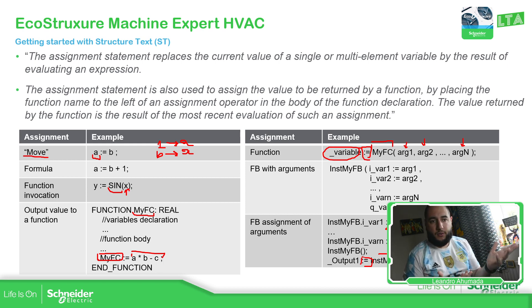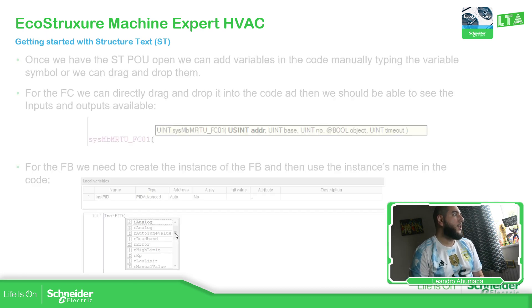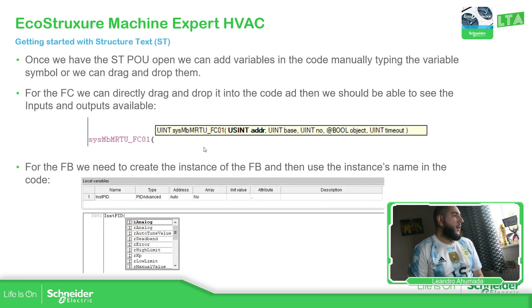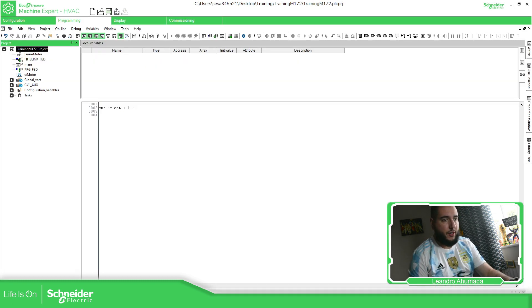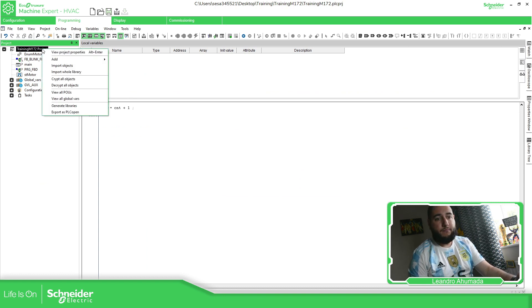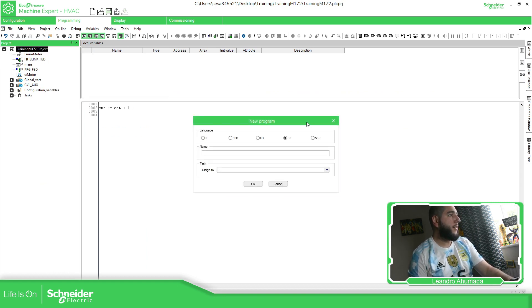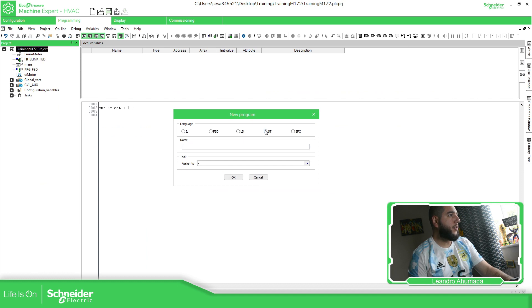So let's go to some examples. In this case I have this function block FC. Let's go to the software and see this. Let's start by creating a POU as a Structured Text.